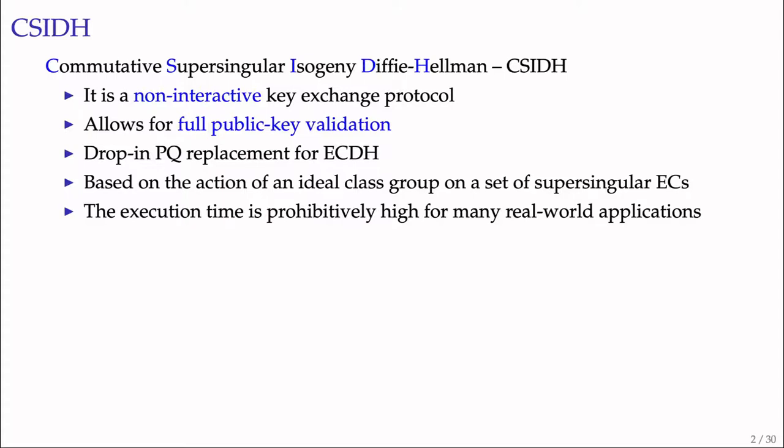The CSIDH protocol is based on the action of an ideal class group on a set of supersingular elliptic curves. Unfortunately, the execution time of CSIDH is prohibitively high for many real-world applications, mainly due to the enormous computational cost of the underlying group action. In this work, we explore how to use powerful vector instructions like Intel AVX-512 to accelerate the computation of the CSIDH group action.